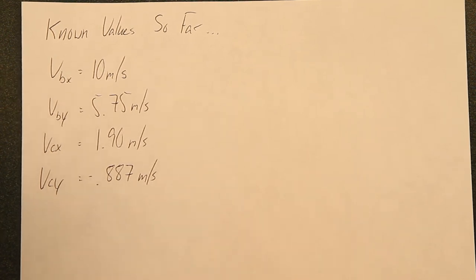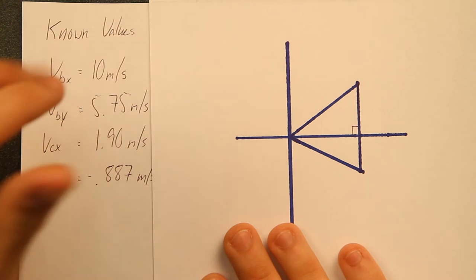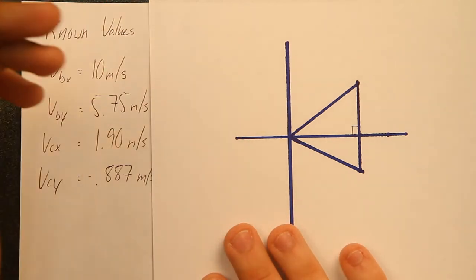First, we have to combine these values so we can solve this equation. Each one of these applies to a spot on our triangle here, or actually both of our triangles.